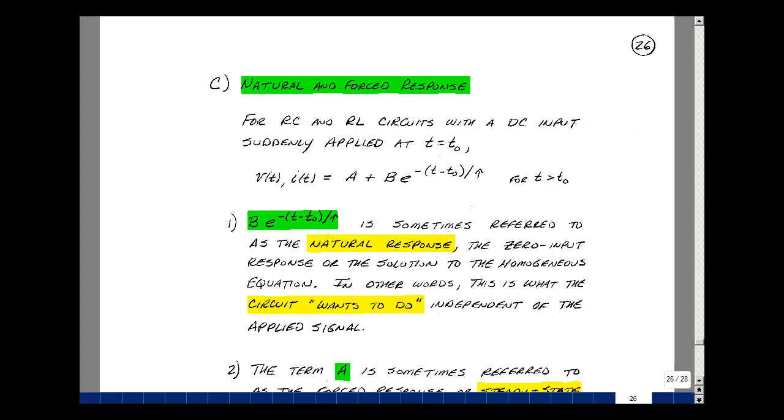In our previous videos, we looked at the response of RC and RL circuits when a DC input was suddenly applied at T equals T0. And we found that for any voltage or any current, this was the form of the solution for T greater than T0.